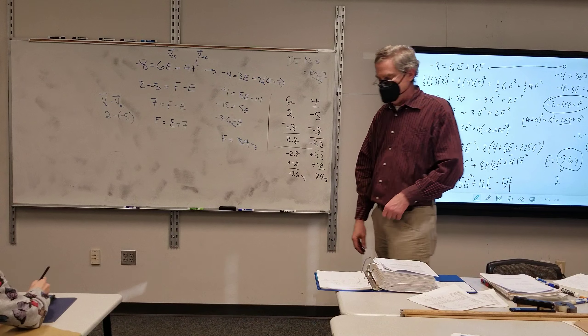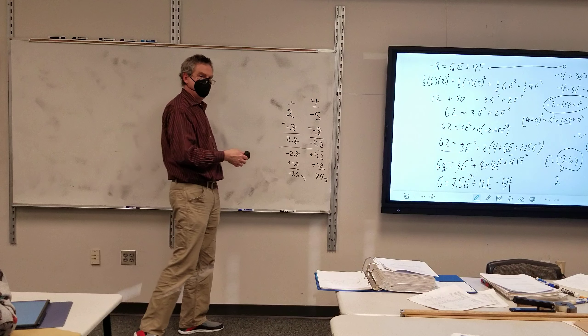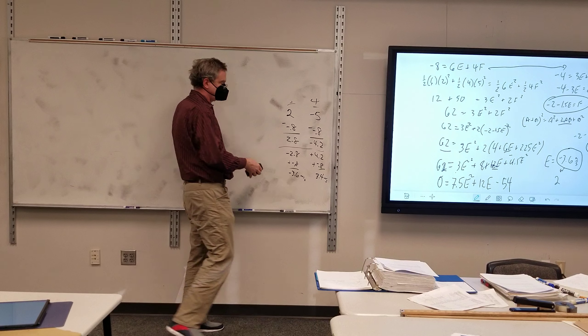Oh, because the 6 kilogram mass is now going in the same direction, which is impossible because it bounced off. And the 4 kilogram mass is also going in the same direction. They pass through each other.